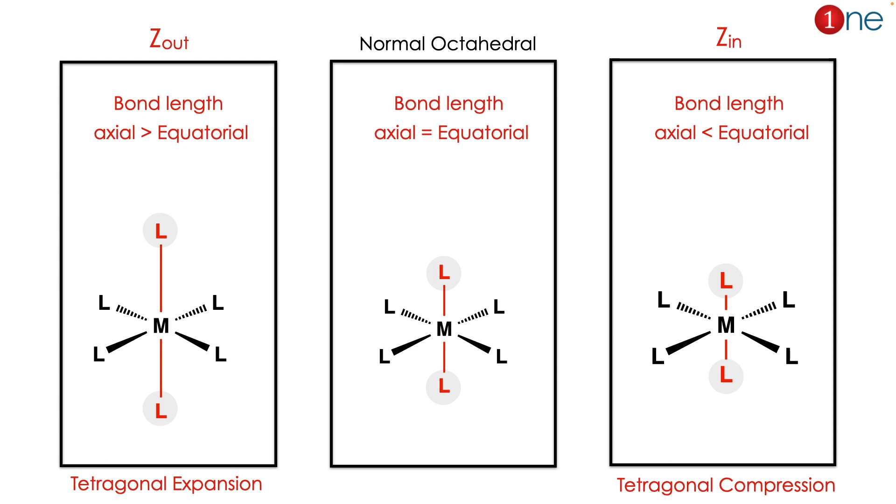If it is Z_out condition, the bond length of axial will be greater than equatorial. If it is Z_in, the bond length of axial will be lesser than equatorial.